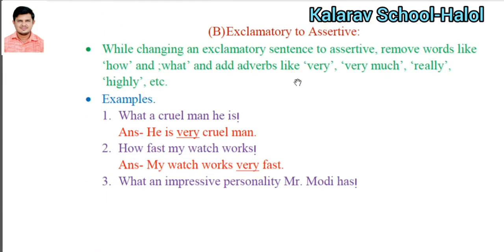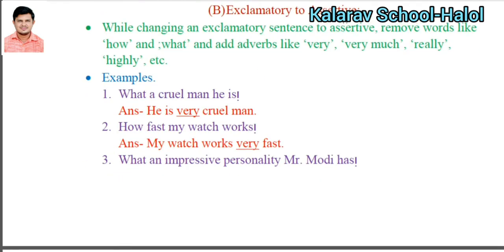Now the rule for exclamatory to assertive: when you transform an exclamatory sentence to assertive, remove the words 'how' and 'what' from the exclamatory sentence, and add an adverb like 'very,' 'very much,' 'really,' or 'highly' according to the situation of the sentence.